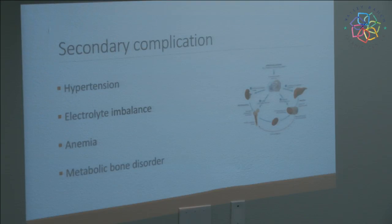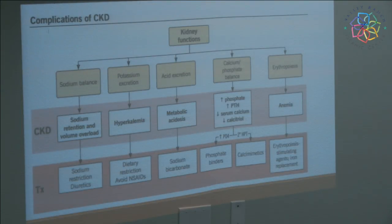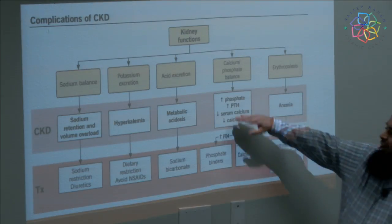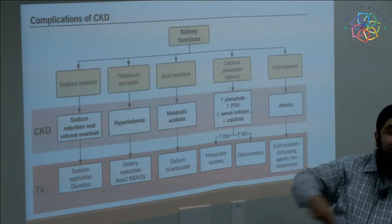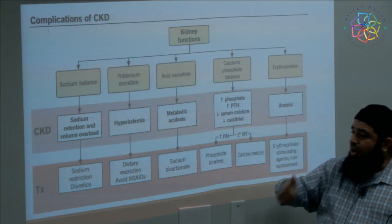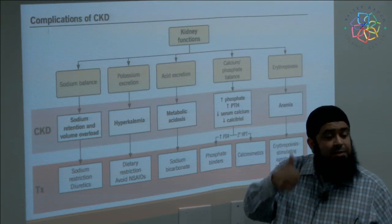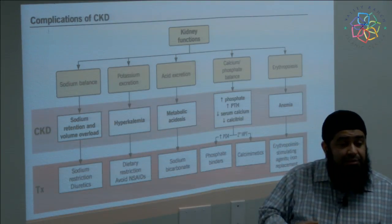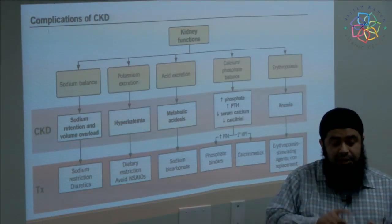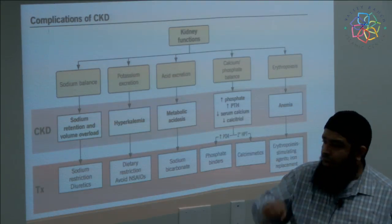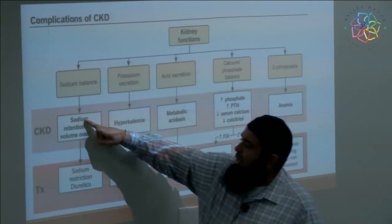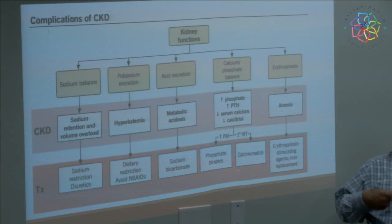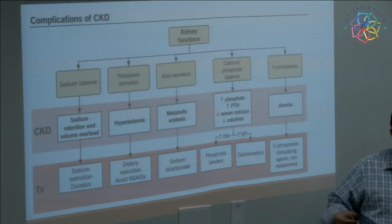Managing secondary complications: if you're anemic I give medications to bring hemoglobin up. If phosphorus is elevated, I give phosphate binders taken with food to bind phosphorus. If there's metabolic acidosis — too much acid — I give alkali to fix that. If potassium is high, I have to reduce dietary potassium — no oranges, no bananas, nothing high in potassium. For sodium retention — too much fluid, leg swelling, shortness of breath — I give diuretics to help get rid of the excess fluid and toxins.